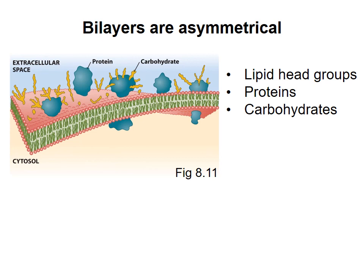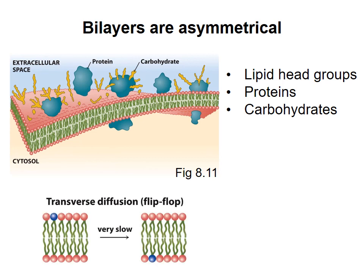It's relatively easy to maintain asymmetry of lipids in a membrane, because diffusion of a lipid molecule from one side of the membrane to the other is very slow. This is an unfavorable process, because the polar head group would have to be exposed to the hydrophobic interior of the membrane as it crosses. But given enough time, some lipids will cross from one side to the other, so cells have enzymes that move stray lipids back to the correct side, maintaining the asymmetry of the membrane.